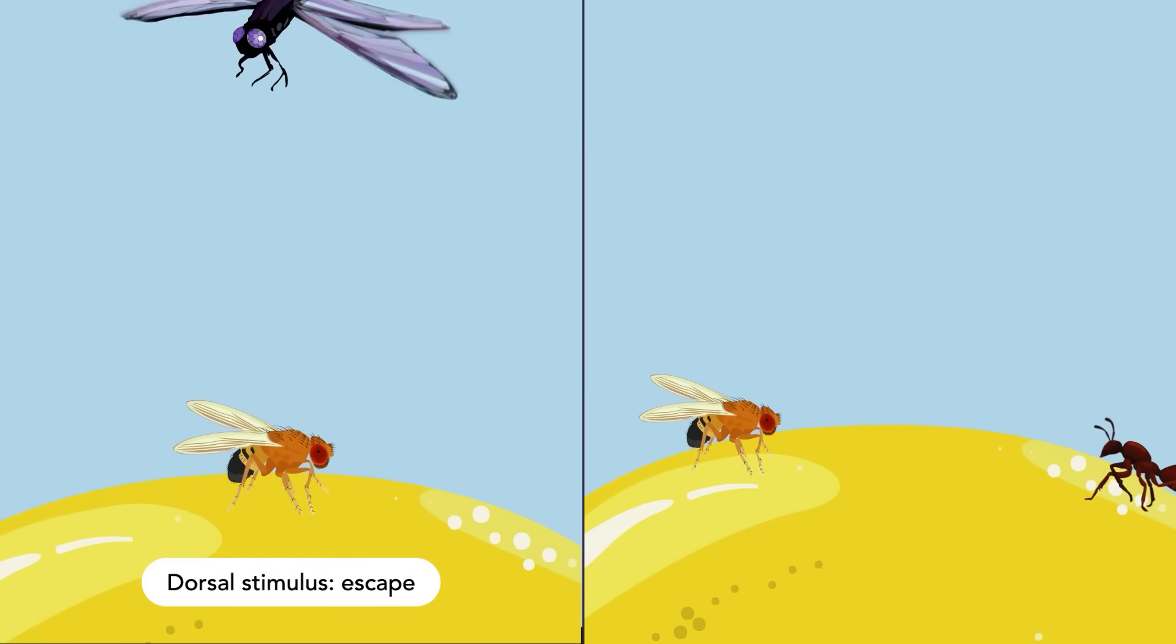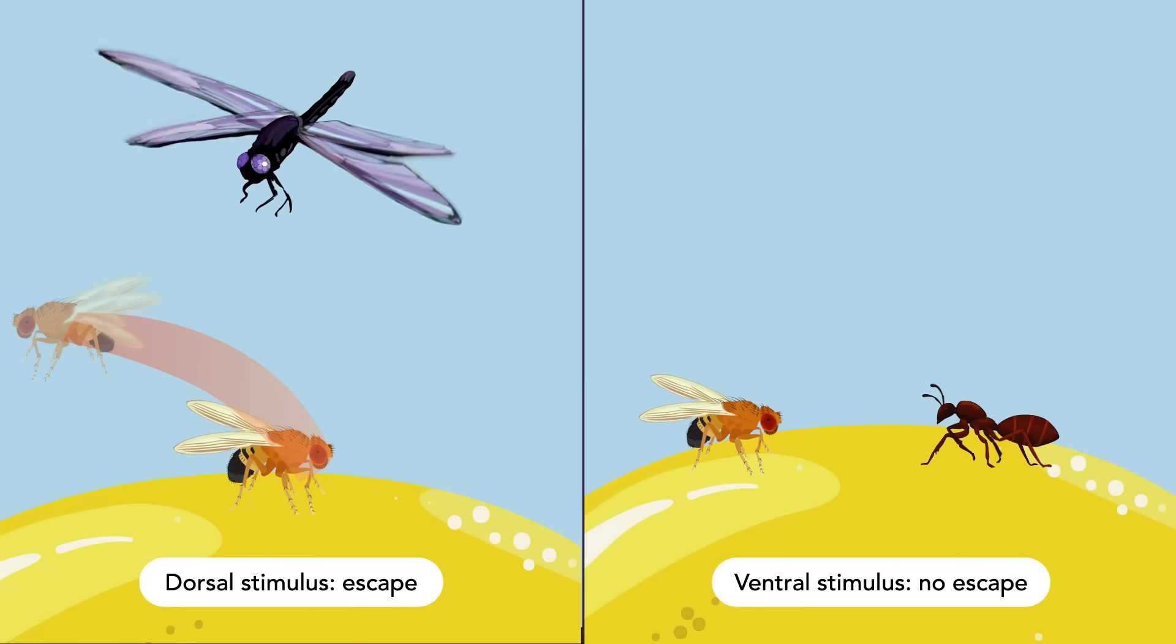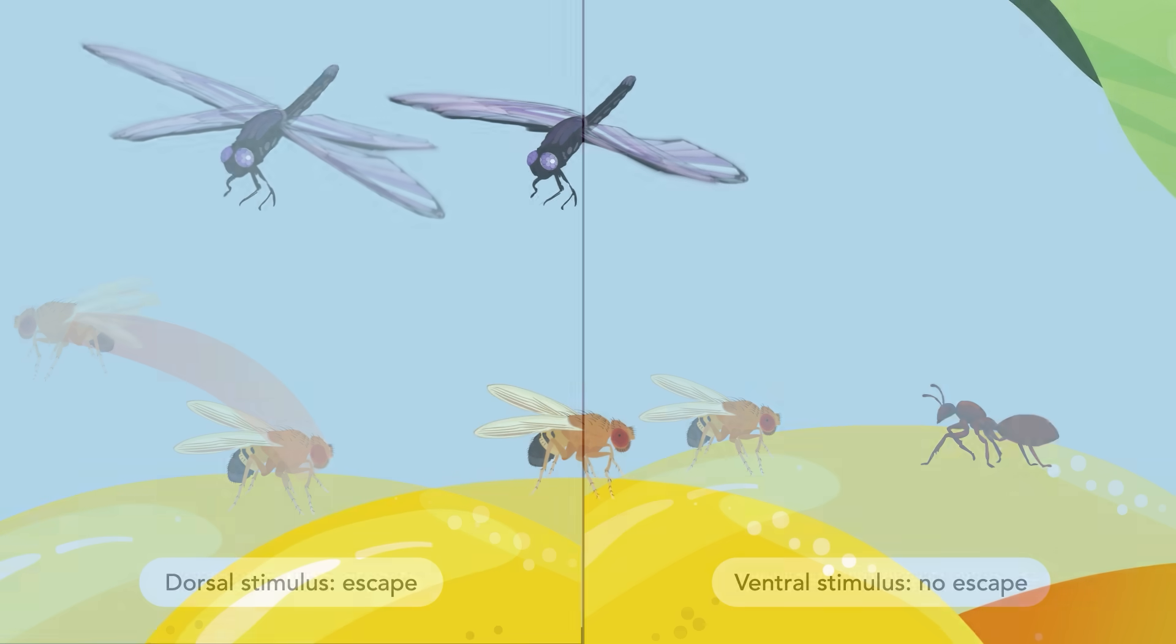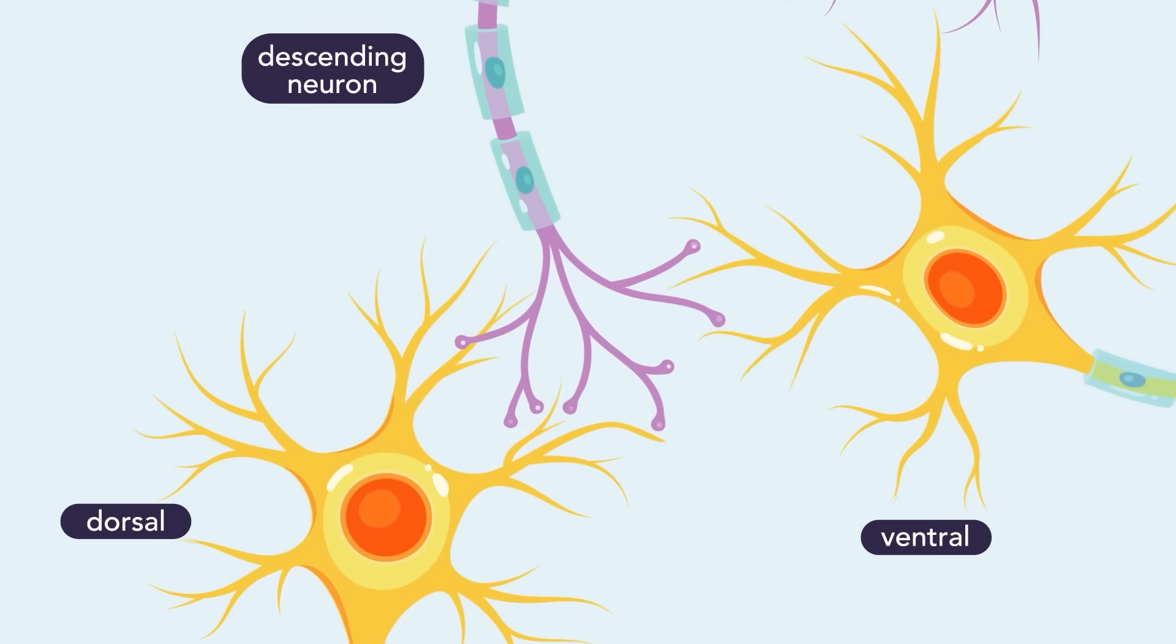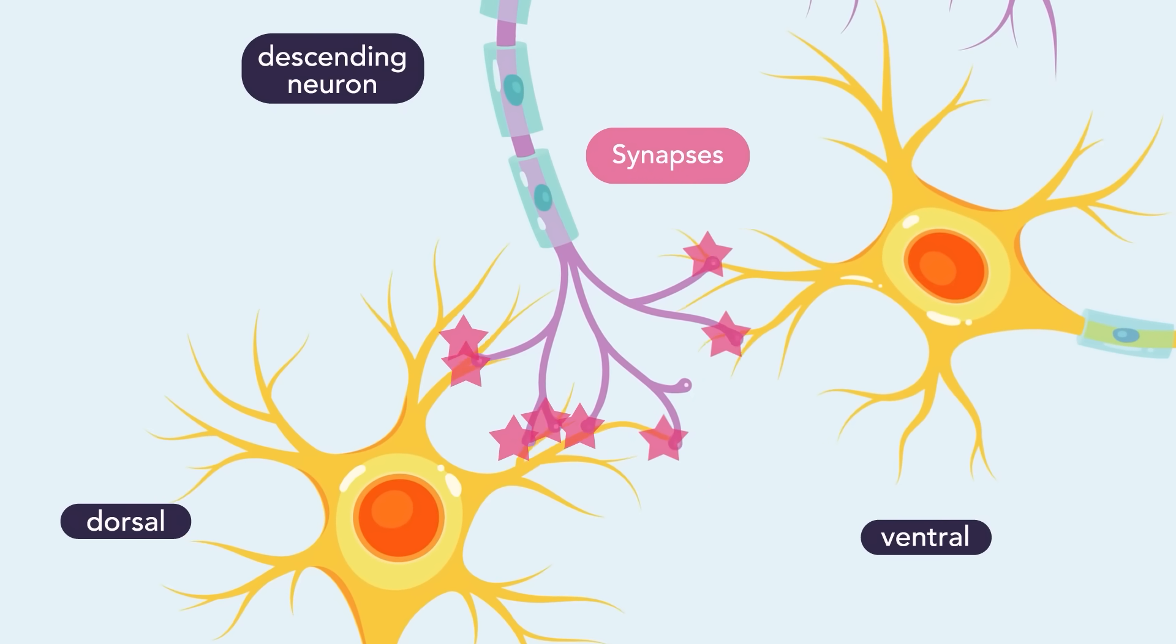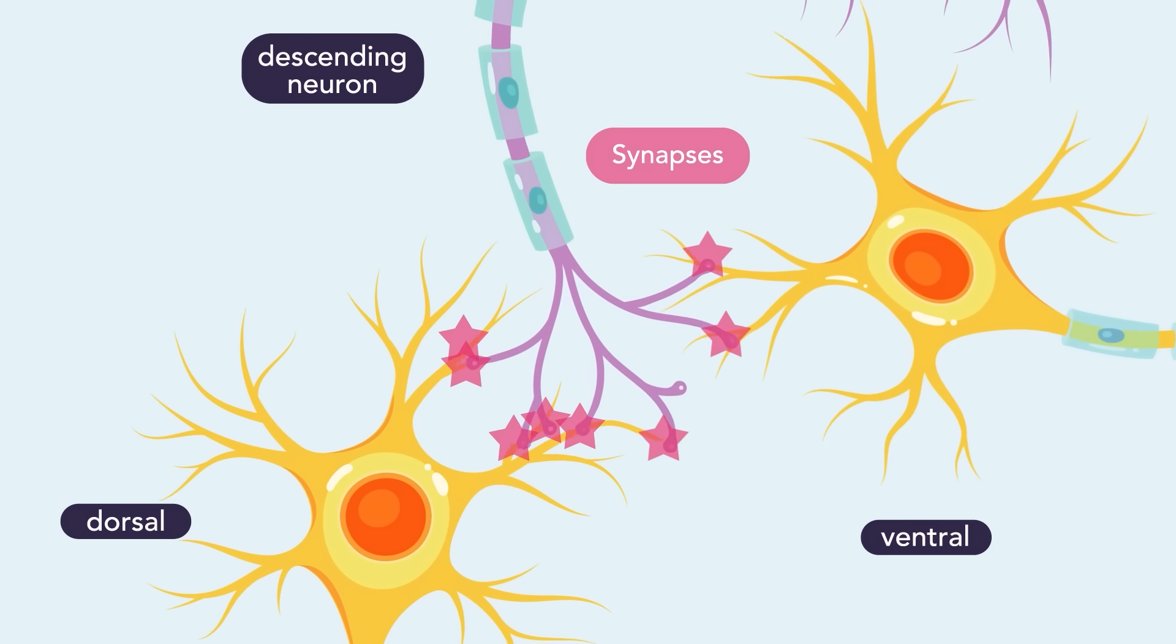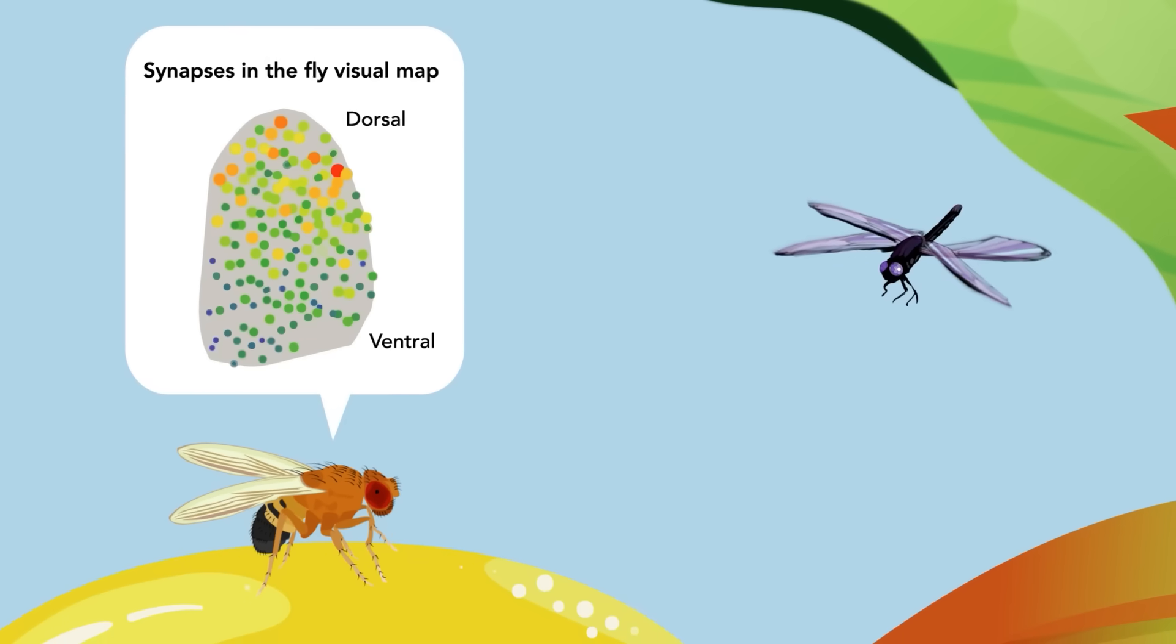They found that neurons belonging to the same neuronal type respond differently to visual stimuli depending on the area of visual space they monitor. This difference arises from variations in their wiring: neurons gradually vary in the number of synapses they form with their downstream partners—descending neurons that control escape movements. These synaptic gradients create a neural map.